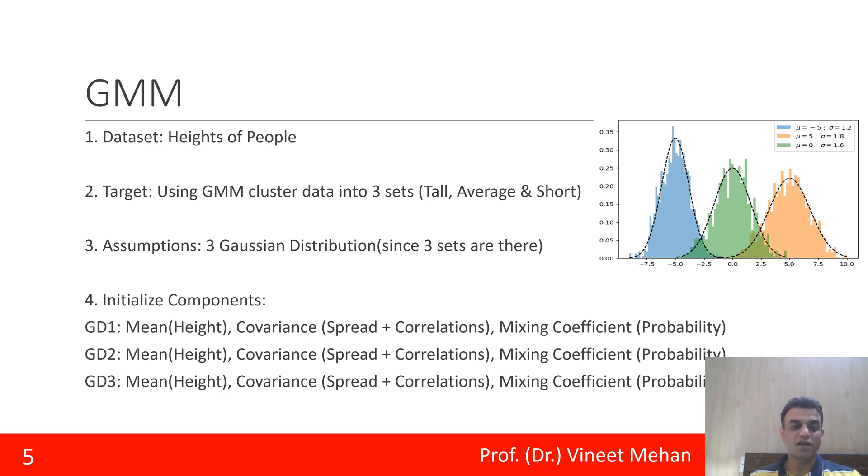Similarly, the second component that is to be identified for each of the Gaussian distributions is the covariance. Covariance is the spread, that is the bottom part - spread of each particular Gaussian distribution. Along with the spread we can also identify correlations among different curves. That is why the name is covariance and not variance. It would have been variance and so only spread would have come. Here it is covariance, so spread and correlations both are coming.